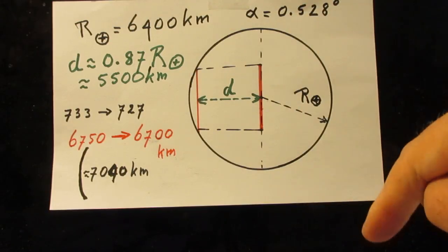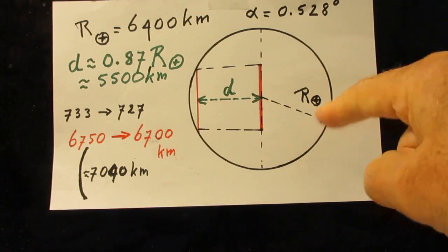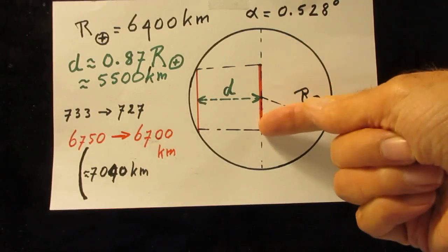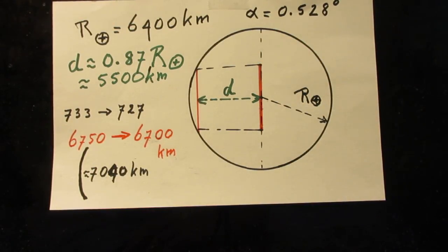I've drawn here the Earth, radius 6400 kilometers, and I've drawn here the diameter of the penumbra if we assume the distance from the center of the Earth to the center of the Moon of 356,000 kilometers.